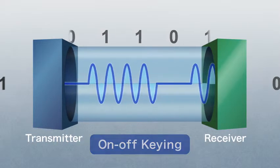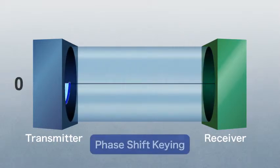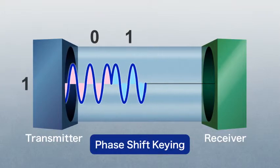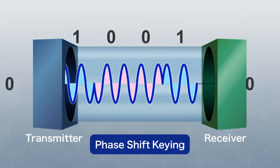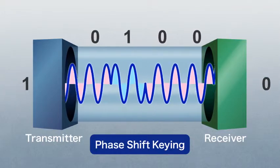In the latest optical communication systems, however, phase shift keying is used. In this modulation format, a digital signal is transmitted by using a phase of the optical signal.